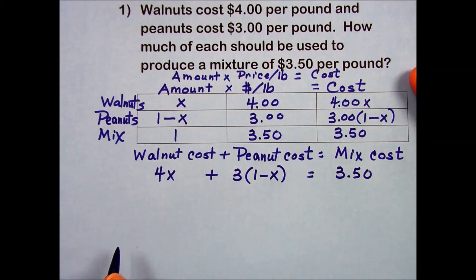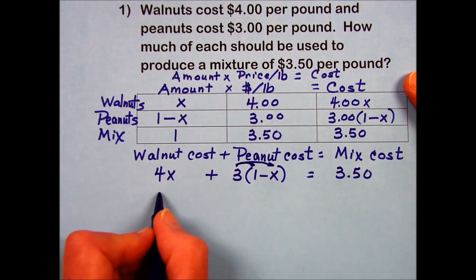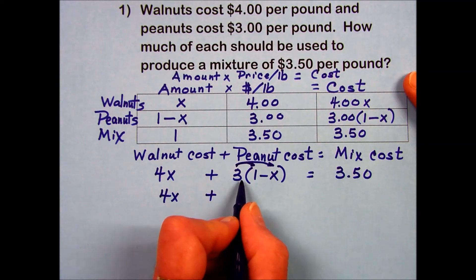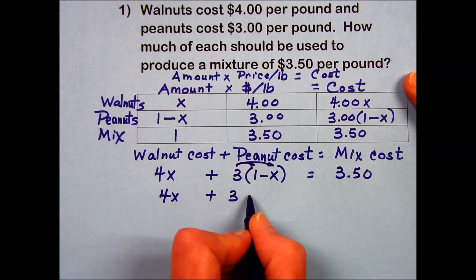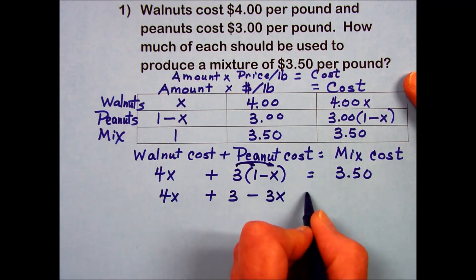Simplifying the equation that we have, first thing of course is to get rid of the parentheses, which involves 3 times each one of those quantities. 3 times 1 is 3. 3 times that x with a minus is going to give us a minus 3x.